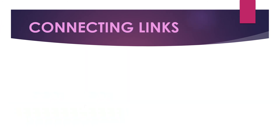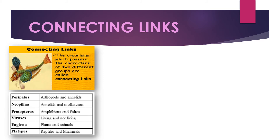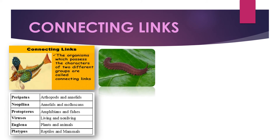Another evidence to prove evolution is the connecting link. Organisms which possess the characters of two different groups are called connecting links. For example, Peripatus has a segmented body, thin cuticle, and parapodia-like organs, but also shows tracheal respiration and an open circulation system similar to arthropods — making it similar to both arthropods and annelids. This indicates that Peripatus is a connecting link between Annelida and Arthropoda.